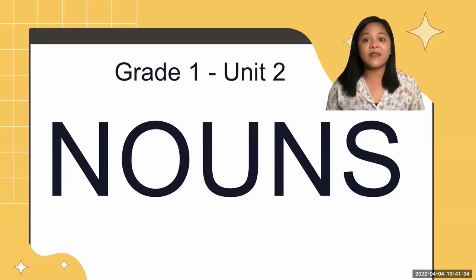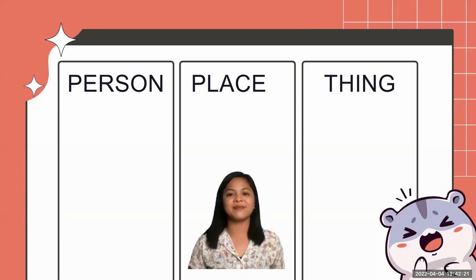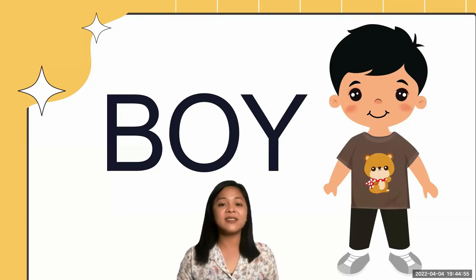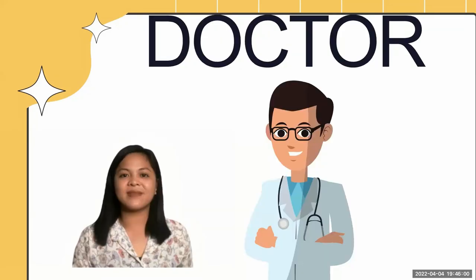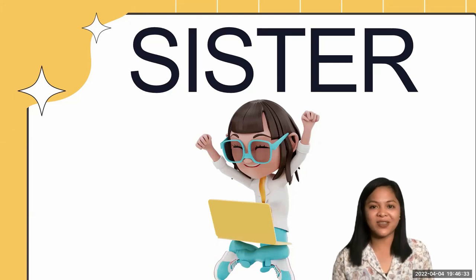Did you know that everything around us has a name? Nouns are the names of a person, place, or a thing. There are so many people around us and all of them have names. Let's find out some examples. One example is a boy, a girl, a teacher like me, and also a doctor. A sister is also a noun that names a person.